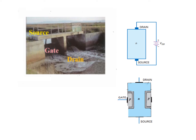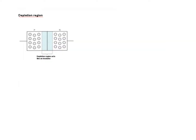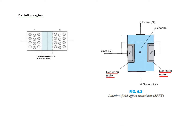So depending on the voltage applied at the gate, this channel becomes narrower and controls the flow of current. Now let's try to understand the concept of depletion region. We know that in P and N type, when they are connected together, the region of the junction becomes empty of electrons and holes. This region is called the depletion region. In our case also, when P and N are connected, we'll have a depletion region.